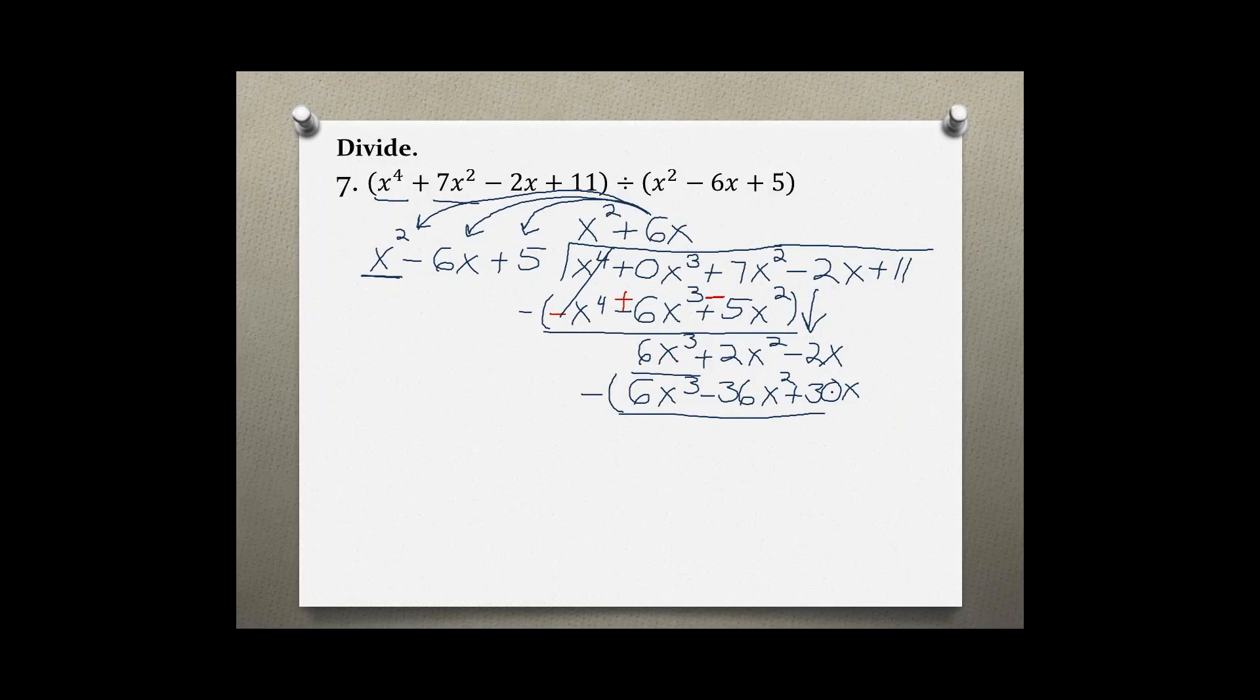Subtracting down and changing our signs, 6x cubed minus 6x cubed, which is 0, 2x squared plus 36x squared, which is 38x squared, and negative 2x minus 30x is negative 32x. Now, bringing down the last term, plus 11, and starting again.